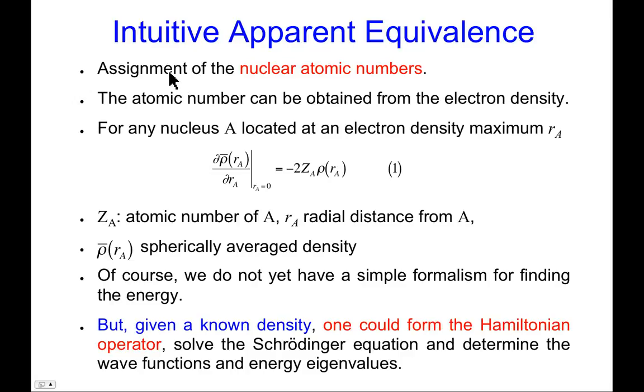So in order to then construct this Hamiltonian from the density, what we'd like to do is use the density to assign the nuclear atomic numbers. We've already determined their positions. That's wherever there's a maximum, and that maximum has cusp properties. That is a nuclear position. But what nucleus is it? And it turns out the atomic number can, in fact, be determined from the electron density.